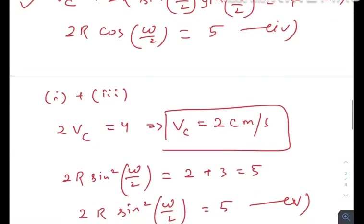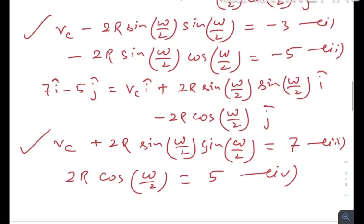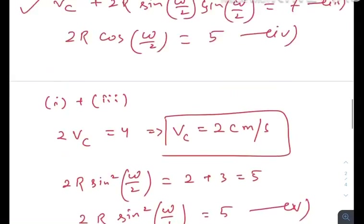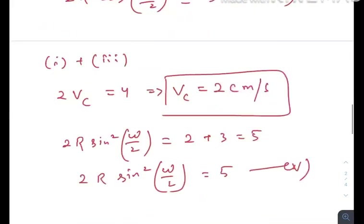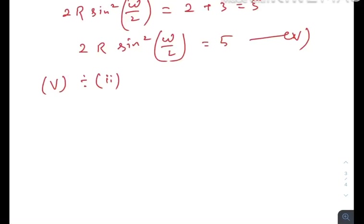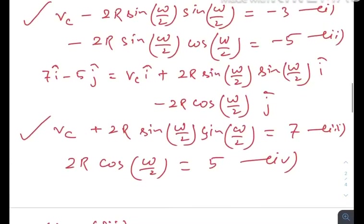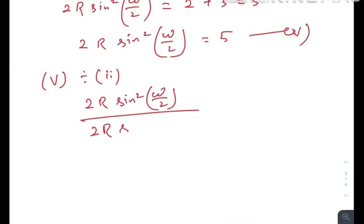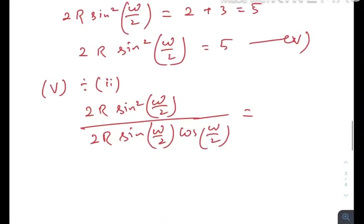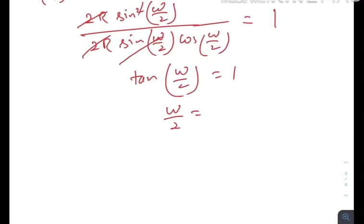Dividing equation 5 by equation 2: (2R·sin²(ω/2)) / (2R·sin(ω/2)·cos(ω/2)) = 5/5 = 1. This simplifies to tan(ω/2) = 1, so ω/2 = π/4, giving ω = π/2 radians per second (approximately 0.5π rad/s). We have our second answer.